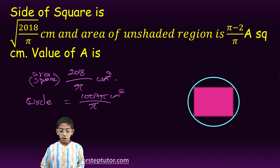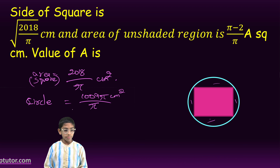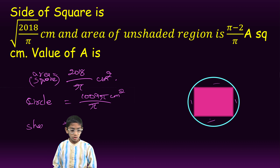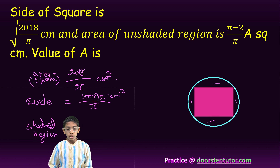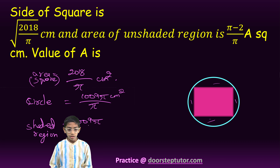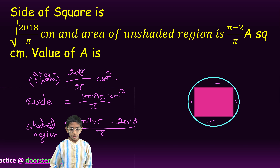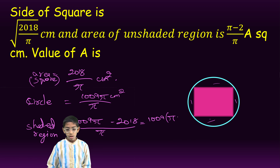So the area of the shaded region will be the difference of both of them. The area of the shaded region will be equal to 1009 pi minus 2018 upon pi. Now we will take 1009 common, which equals 1009 multiplied by pi minus 2 upon pi.